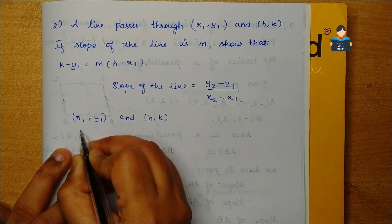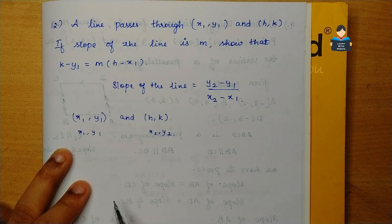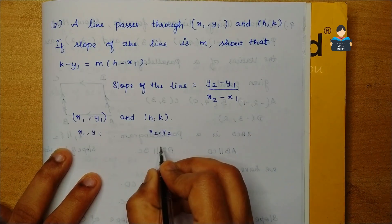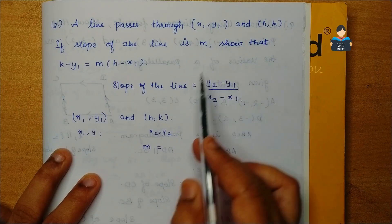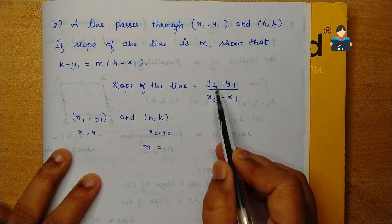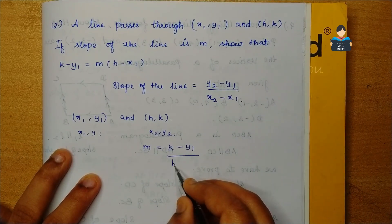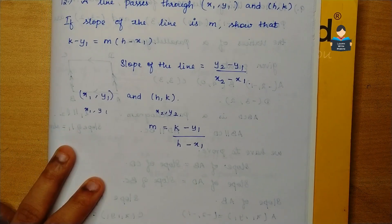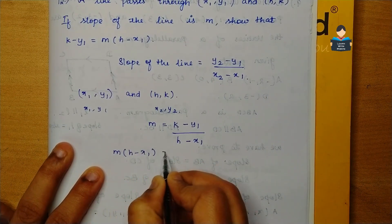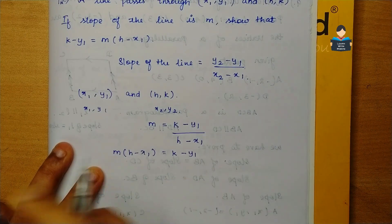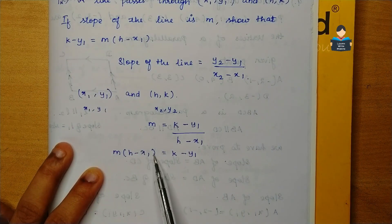So, m is equal to y2 minus y1, that is k minus y1, by x2, that is h minus x1. So the slope of the line gives m equal to k minus y1 by h minus x1. Therefore, k minus y1 is equal to m into h minus x1.